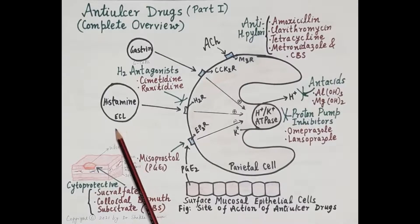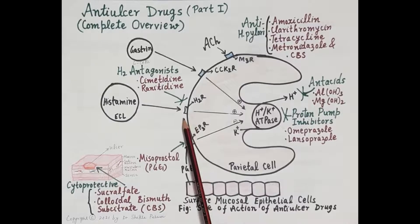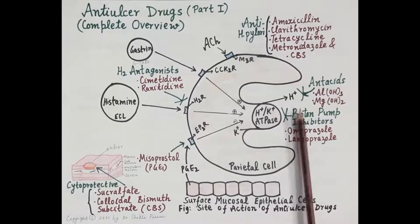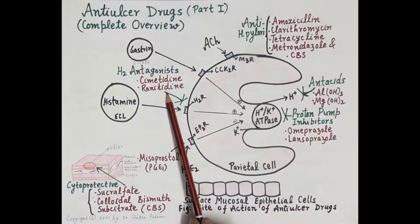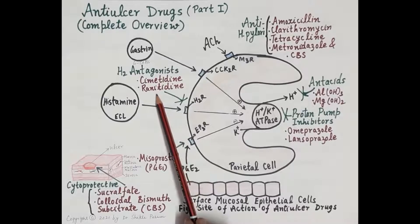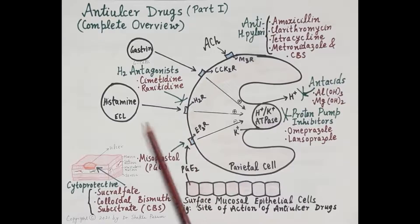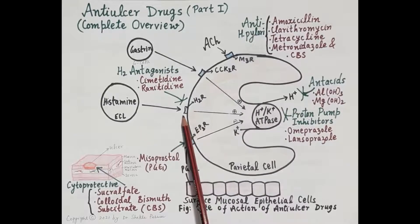Histamine is released from enterochromaffin-like cells. This released histamine binds to histamine H2 receptors on the parietal cells, stimulating the proton pump to release acid. H2 antagonists like cimetidine and ranitidine are competitive antagonists of histamine at the H2 receptor, thereby inhibiting the binding of histamine and suppressing the secretion of gastric acid by the parietal cells.